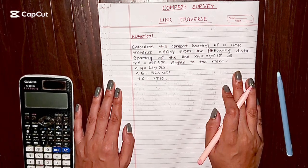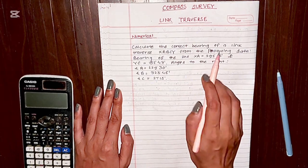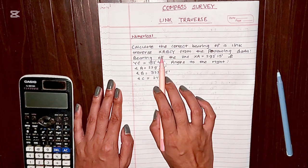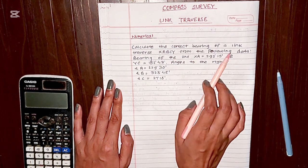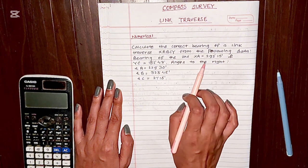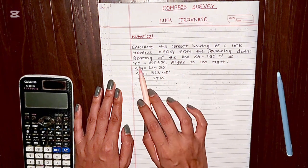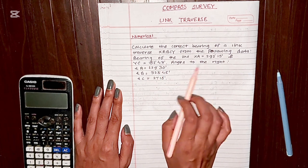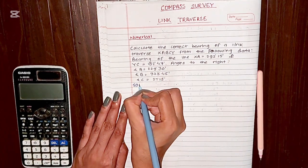Hi everyone, welcome back to my YouTube channel. Today we are going to solve a numerical on the topic of link traverse. The given numerical is: calculate the correct bearing of a link traverse XABCY from the following data. The bearing of the first line XA and the last line YC is given, along with the angles to the right.